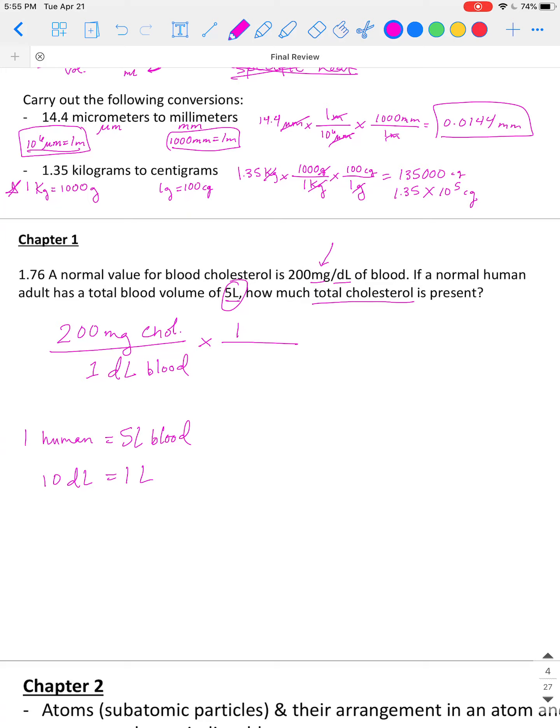So I'm going to convert from deciliters, 10 deciliters, to 1 liter. And then I'm going to convert from liters to, we want to know how much total cholesterol is present in 1 human. So if you have a unit on bottom, it would be per human body. So then we'll say for every 5 liters of blood, that's 1 human.